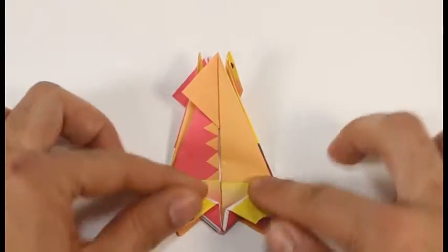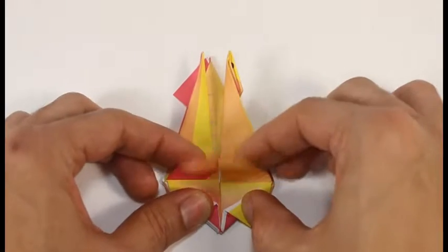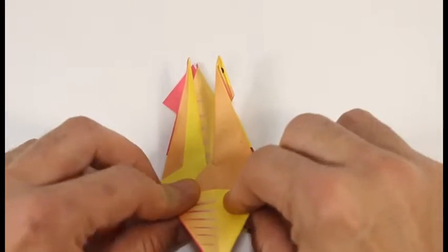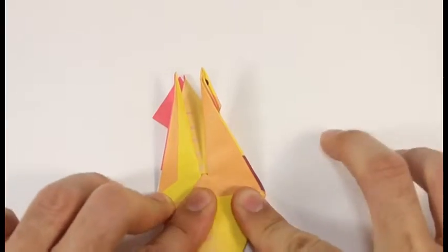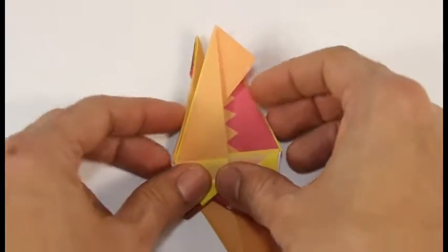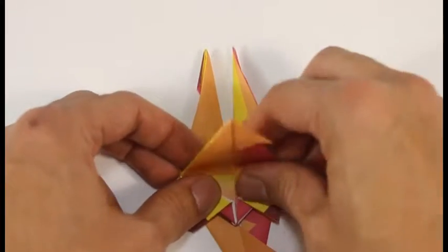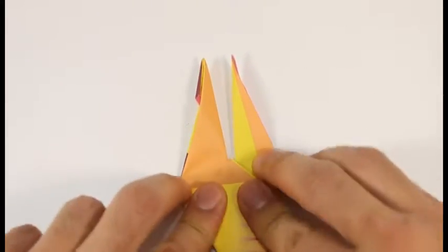There's a lot of layers here so make sure to crease everything firmly. Fold the wing down. Turn over. Fold the other wing down.